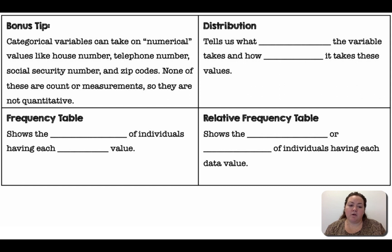Bonus tip. Categorical variables can take on numerical values like house numbers, telephone numbers, social security numbers, and zip codes. None of these are counts or measurements, so they are not quantitative. So like zip code is a number, but it's not really tied to doing any sort of math. It wouldn't make sense to collect everybody's zip code and then average them. That would just give you a random number. It's not really tied to something. It's putting you into a category which area you live in.